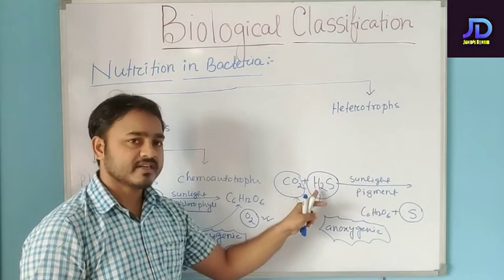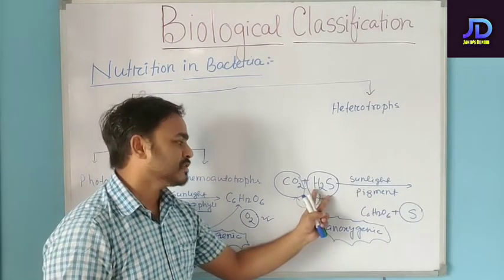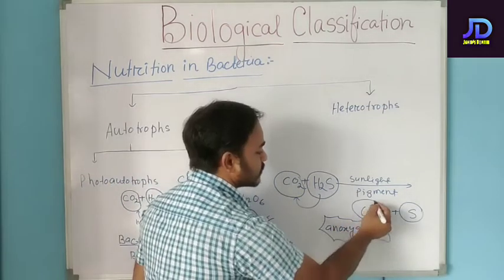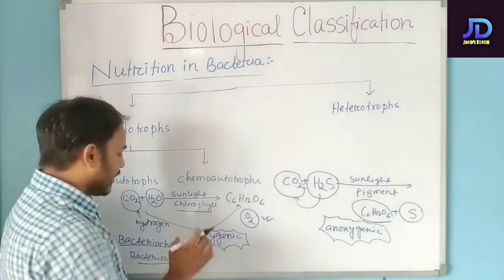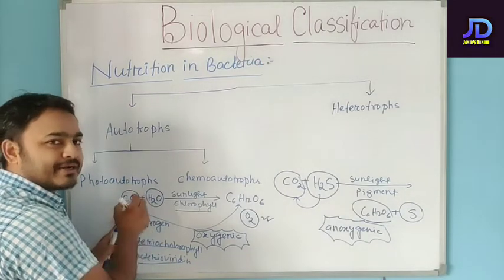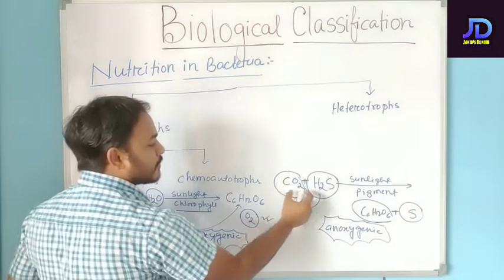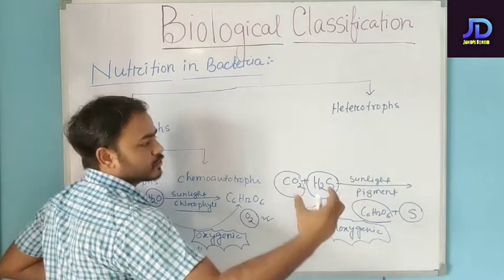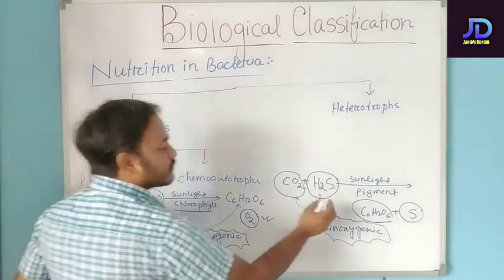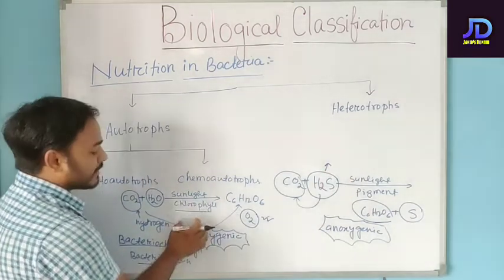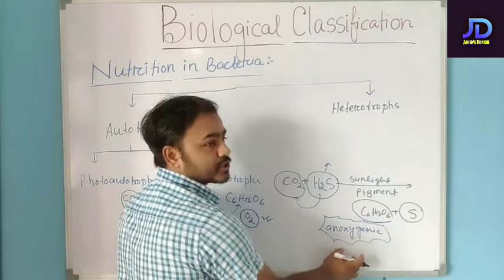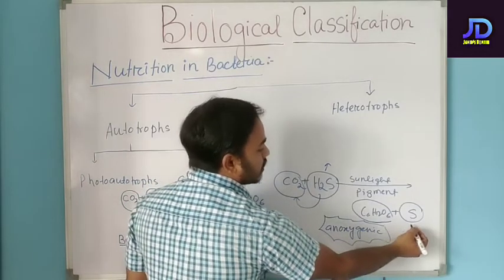So in bacteria: hydrogen sulfide and carbon dioxide, in the presence of the pigment, give glucose production. The difference from plants is that plants use water molecules whereas bacteria use hydrogen sulfide — resulting in sulfur production rather than oxygen formation.